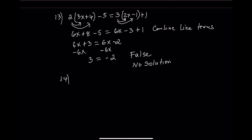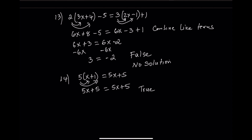Equation 14: 5 times the quantity x plus 1 equals 5x plus 5. Step 1: distribute — 5 times x plus 5 times 1 — which gives 5x plus 5. So both sides are 5x plus 5. Because both sides are equal, the solution is all real numbers. This equation is called an identity.